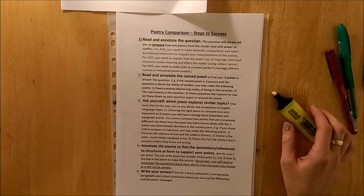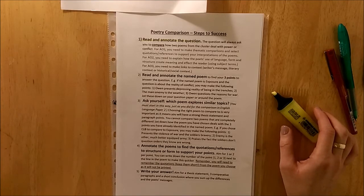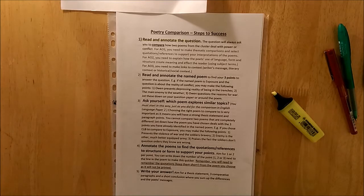For AO1, you need thematic comparisons. You need to select decent, weighty quotations to support your interpretation. For AO2, as always, we are looking at the how. The poet's use of language, form and structure to create meaning and its effects on the reader. How it makes you feel as a reader. We always use our subject terms for AO2.